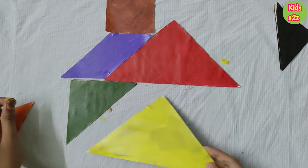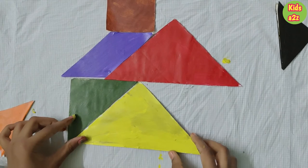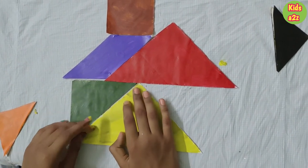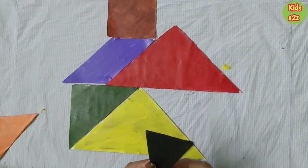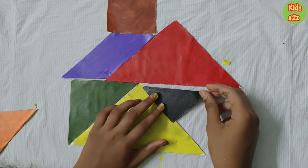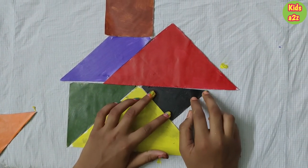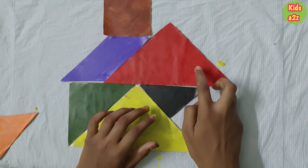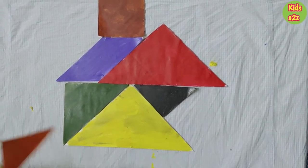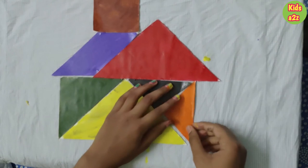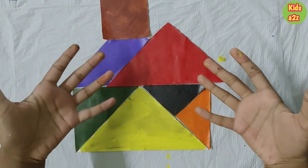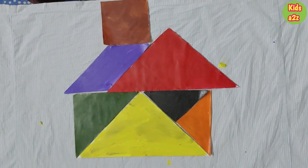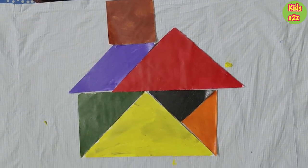Next let's take the big triangle and put it over here. And take one of the small triangles and put it upside down under this big triangle. And finally put our last piece over here. And that completes our beautiful colorful looking tangram house.